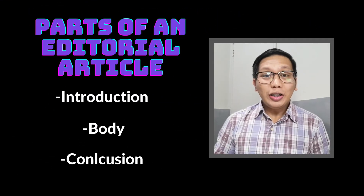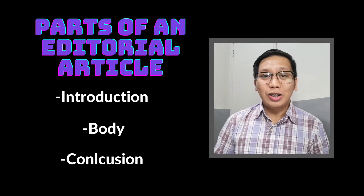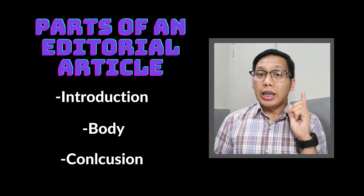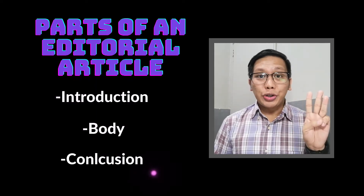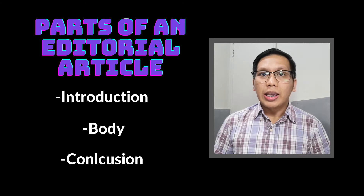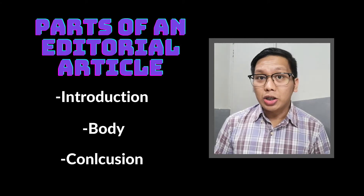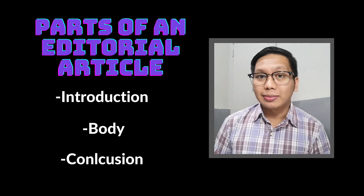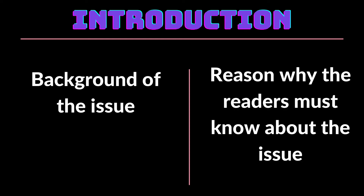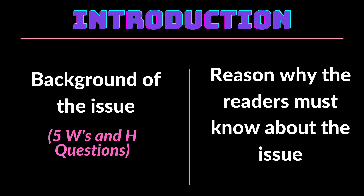The previous video enumerated the different parts of an editorial article. This includes introduction, body, and conclusion. But apart from structure, it is also important that the writer is knowledgeable about the actual content. The introduction contains two general parts: the background of the issue and the reason why the readers must know something about it. Specifically, the background needs to contain details that answer the five W's and an H questions.